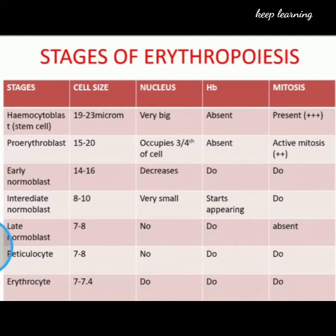In the early normoblast, cell size is 14 to 16 microns, nucleus size decreases further, and hemoglobin is still absent. In the intermediate normoblast, cell size is 8 to 10 microns, the nucleus is very small, hemoglobin starts to appear, and mitosis is still present. In the late normoblast, cell size further decreases to 7 to 8 microns, there is no nucleus, hemoglobin is present, and mitosis stops.